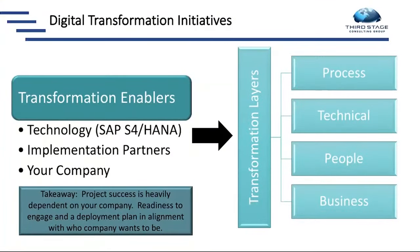When looking at digital transformation initiatives and transformation enablers, the SAP S4 HANA technology is a key enabler. In addition, you have your implementation partners — your system integrator, other outside consulting firms — as well as your company and internal resources. The four primary layers of transformation are: the process side, the technology side, the people or organizational change side, and your business operations. These are the four primary areas we help our clients prepare within as they get ready for their S4 HANA implementations.